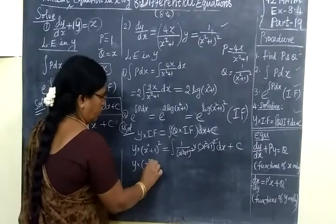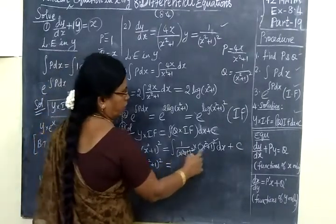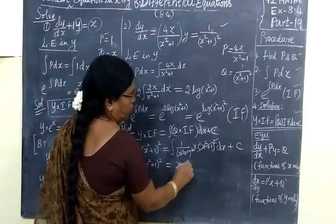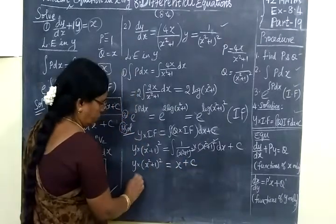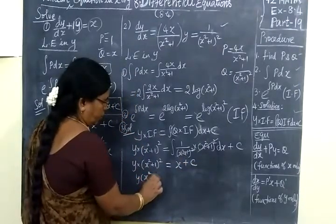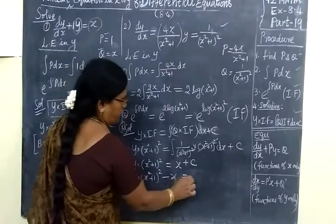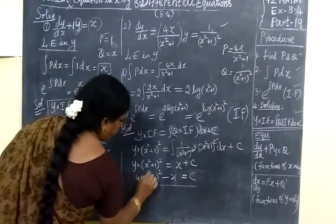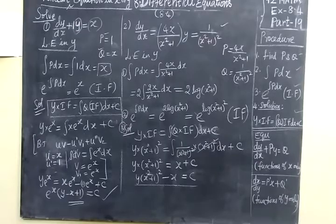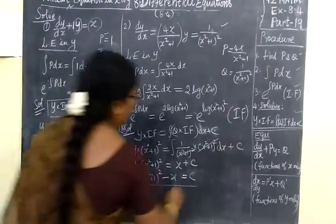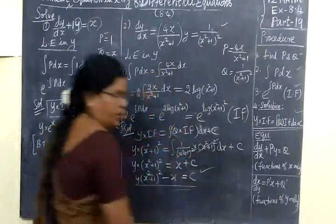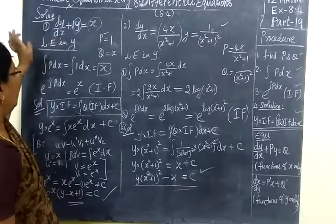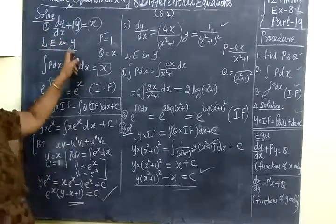Simplifying, y times x squared plus 1 squared equals the integral of 1, which is simply x, plus C. So the final answer is y bracket x squared plus 1 whole squared minus x equals C. We verify this answer is correct. In summary, for a first-order linear equation in x or y, the procedure is: identify P and Q, find integral P dS, find the integrating factor, then write the solution.